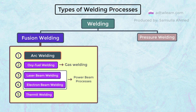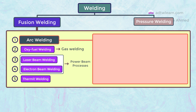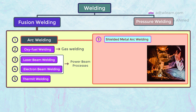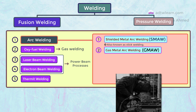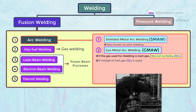The most commonly used method in arc welding is Shielded Metal Arc Welding, shortly called SMAW, also known as stick welding. The second method is Gas Metal Arc Welding, shortly called GMAW. In this process, if the shielding gas used is an inert gas, it is called Metal Inert Gas welding — MIG welding. If instead CO2 is used, it is called Metal Active Gas welding — MAG welding. In general this welding is called GMAW because gas is used for shielding purposes.